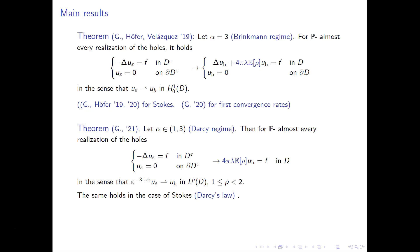When alpha equals one it is a very different problem because there is only one scale. You can use capacity but the limit cell problem changes: in the periodic case you have a cell problem in the cell; in the random case you need to lift to probability space and have a more complex cell problem. For the periodic case with alpha = 1 there is a paper by Cioranescu and others establishing convergence, but it is given by a different mechanism, not capacity in the same sense.